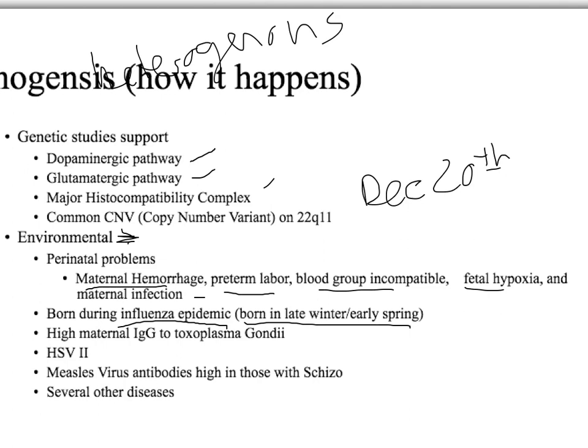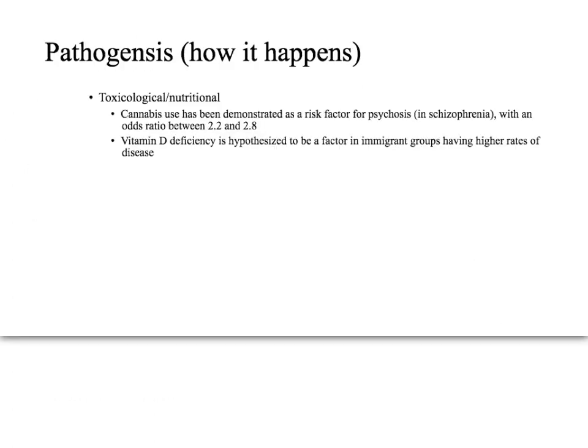There are also specific diseases whose contraction increases the likelihood of being diagnosed with schizophrenia. Herpes simplex virus 2 and measles virus antibodies are both associated with increased risk. Additionally, if the mother has a high IgG for Toxoplasma gondii — the toxoplasmosis associated with kitty litter exposure during pregnancy — that can also be linked to schizophrenia. Interestingly, not only does the child have increased risk, but the mother does as well for developing it later in life.